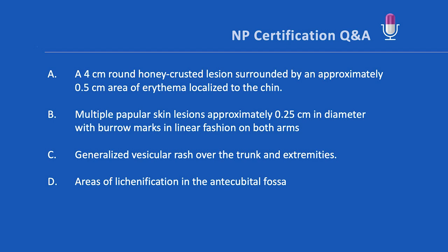A: a four-centimeter round honey-crusted lesion surrounded by about a 0.5-centimeter area of erythema localized to the chin. B: multiple papular skin lesions about 0.25 centimeters in diameter with burrow marks in a linear fashion on both arms.